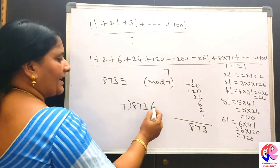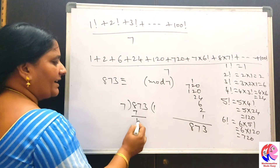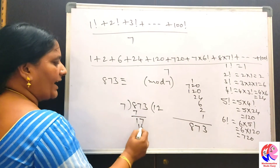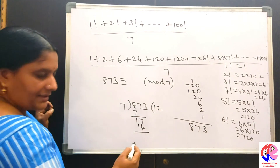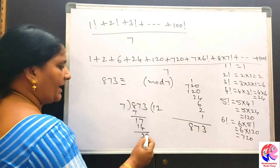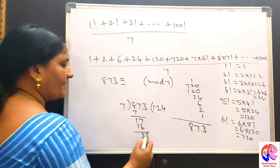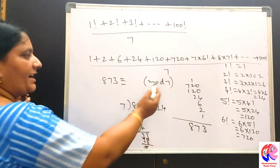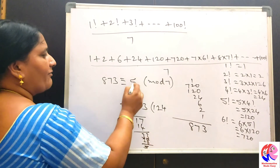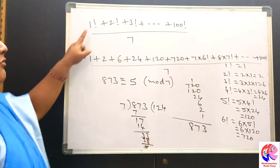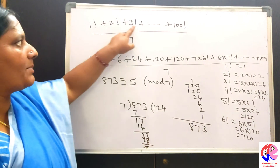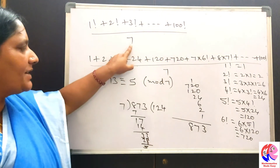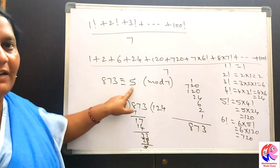873 divided by 7: 7 goes into 8 one time, remainder 1. Bring down 7, giving 17 — 7 goes into 17 twice giving 14, remainder 3. Bring down 3, giving 33 — 7 goes into 33 four times giving 28, remainder 5. So the remainder when 873 is divided by 7 is 5. Therefore, 1 factorial plus 2 factorial plus 3 factorial plus so on plus 100 factorial, when divided by 7, the remainder is 5.